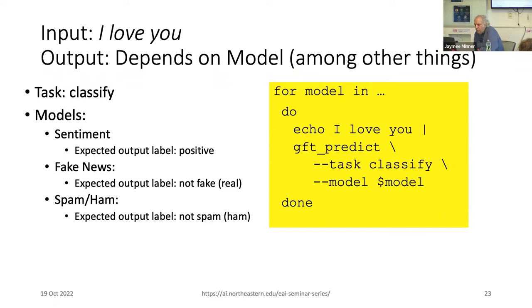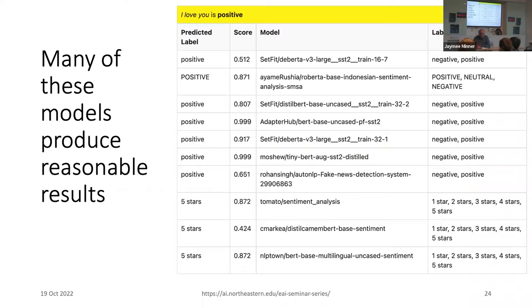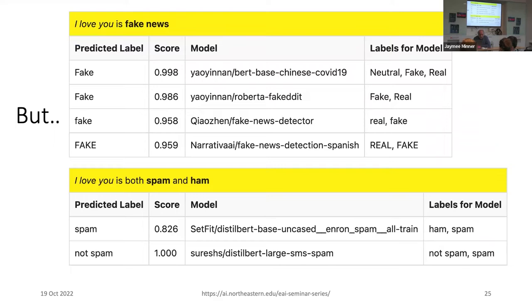To end this discussion of the little language: if you have a loop — for model in some set of models — with the same input to the same function, you get different results depending on what model you use. I'll show sentiment analysis, fake news, and spam/ham detection. Here is a bunch of models where I gave it 'I love you' — they mostly came back with positive, although the first model was not very confident: 51% on a two-way forced choice.